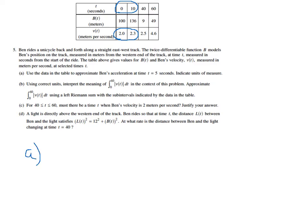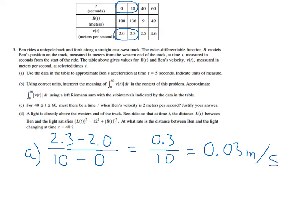So for part A, all we need to do is use our regular old slope formula and say 2.3 minus 2.0 over 10 minus 0, change in velocity over change in time. That's what acceleration is, and so that's going to give us 0.3 over 10, which is 0.03. And it says to indicate units of measure, my velocity is measured in meters per second, so this is meters per second per second, or meters per second squared.